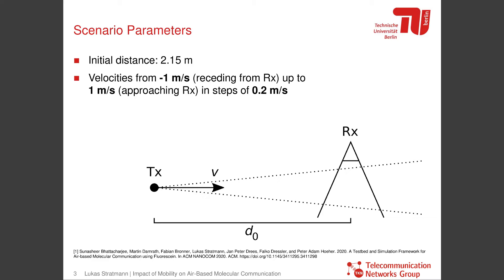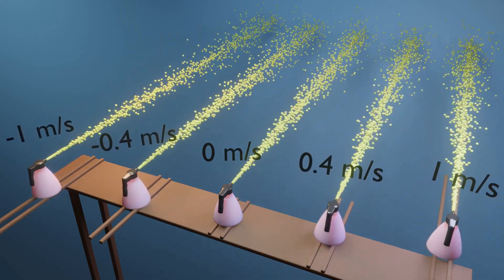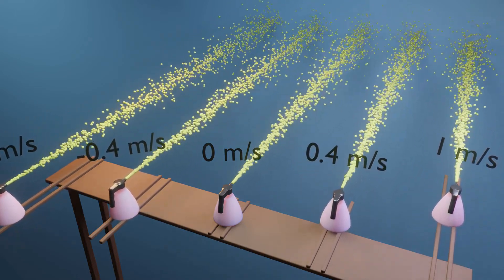Now we extended our simulator to allow the transmitter to be mobile, and we looked at how the channel impulse response is affected if the transmitter moves towards or away from the receiver at different velocities.